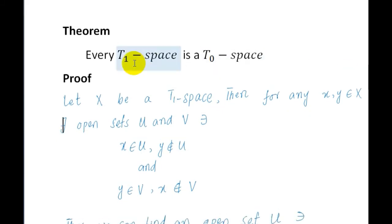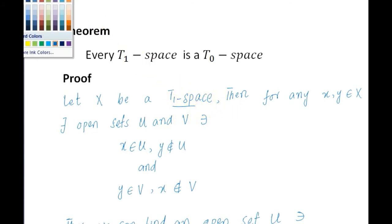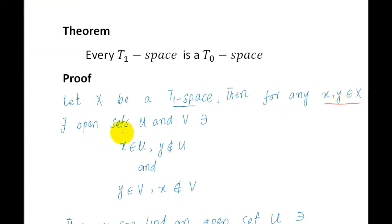Next we have a theorem: every T1 space is a T0 space. Let X be a T1 space. Since X is a T1 space it satisfies the definition of T1 space: for any X, Y belonging to X there exist open sets U and V such that X belongs to U, Y does not belong to U, and Y belongs to V, and if Y belongs to V then X does not belong to V. We need to prove that X is also a T0 space.